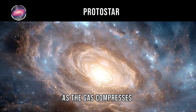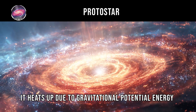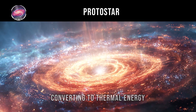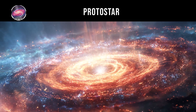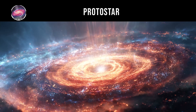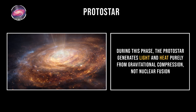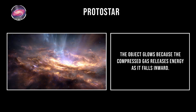As the gas compresses, it heats up due to gravitational potential energy converting to thermal energy. The temperature rises from near absolute zero to several thousand degrees Kelvin. During this phase, the protostar generates light and heat purely from gravitational compression, not nuclear fusion. The object glows because the compressed gas releases energy as it falls inward.